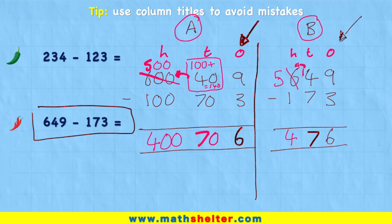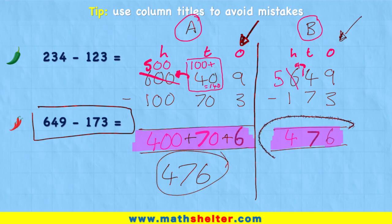Now, I'm not quite done because over on this short method, I've got my final answer, 476. But in my expanded method, my answer is still expanded. So I need to do the final step, which is to add it all together. So I'd have 400 plus 70 plus 6 equals 476. Same answer, in both, just two different methods.